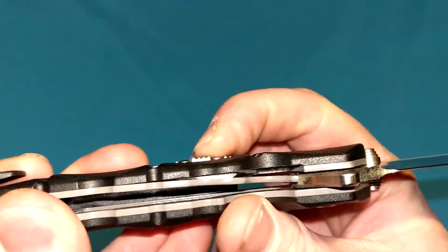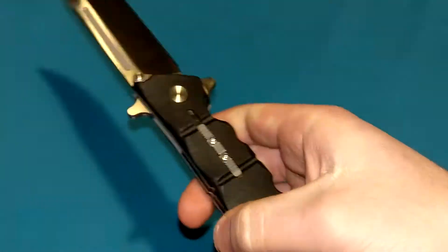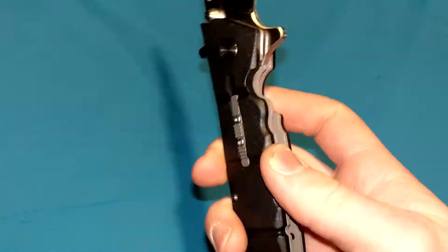It's very simple. Works very well. That's it. And again, just like the LAWKS, you don't have to use it if you don't want to. It's not obtrusive. It doesn't really get in the way. Cold Steel's putting this on a lot of their liner locks, which makes sense.